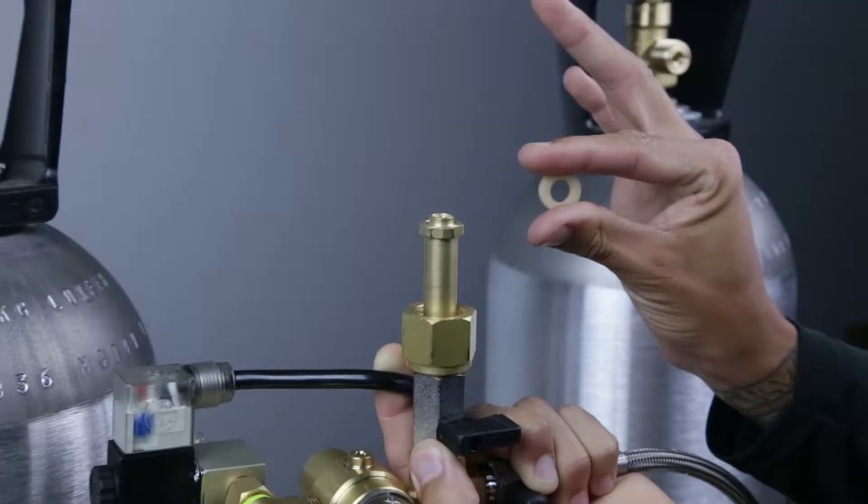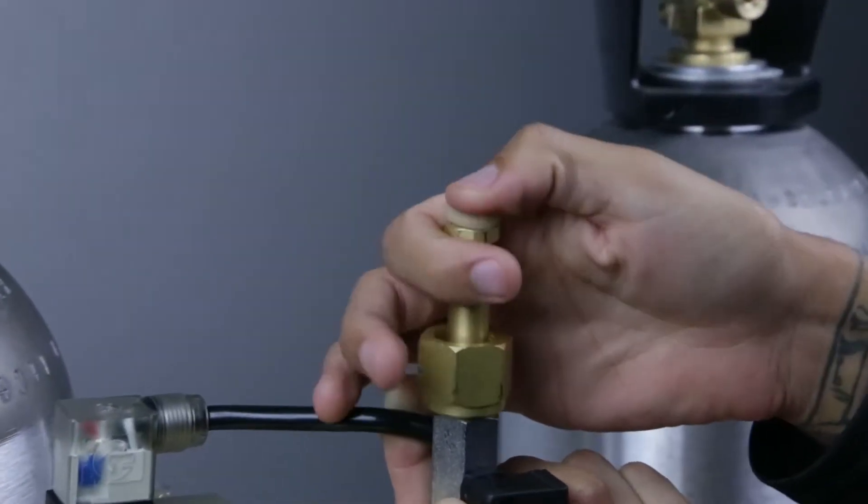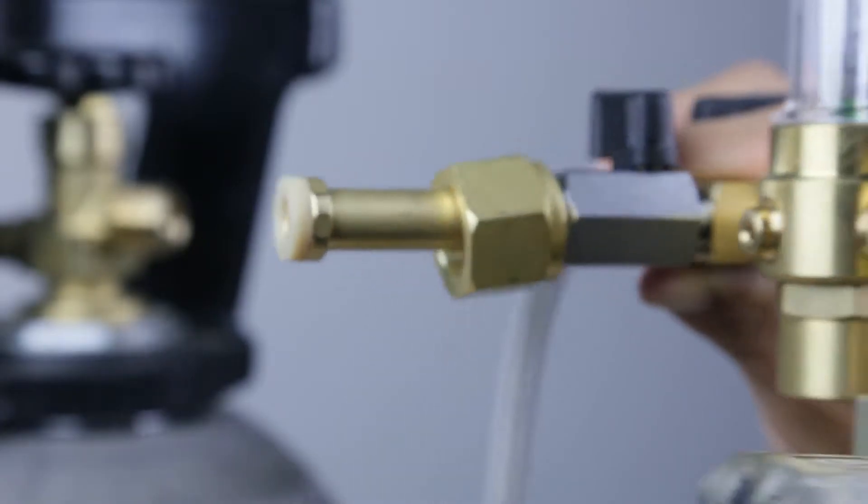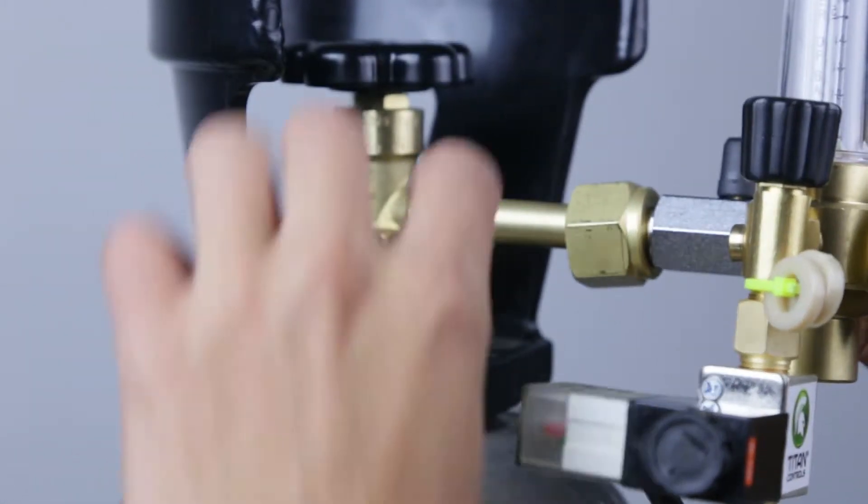Setting up your Titan dual tank regulator is easy. You start by inserting the washer between the primary valve connection and CO2 tank.